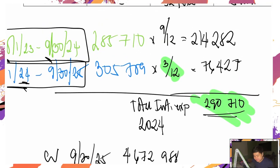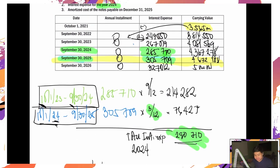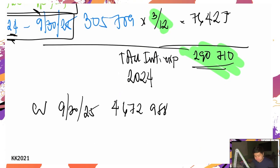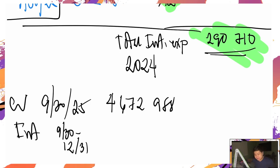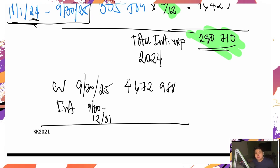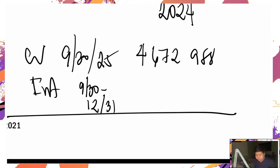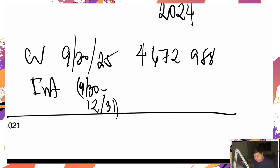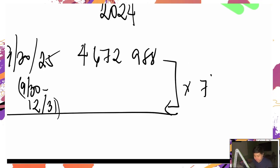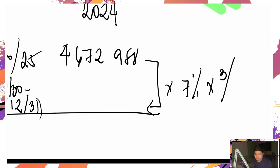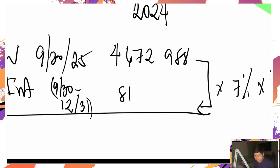Tuboan natin ang interest — from October 1 hanggang December 31. Ang interest lang yan, lumalaki kasi naka-interest. From September 30 hanggang December 31 — that's October, November, December — three months. So: 4,672,988 times 7% times 3 over 12. Ang lalabas dyan: 81,777.